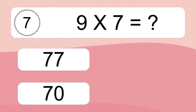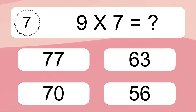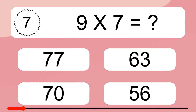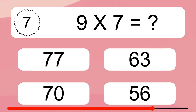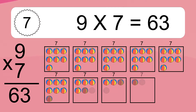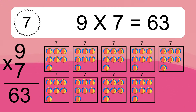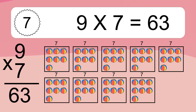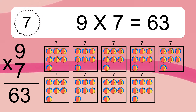9 times 7 equals what? 9 times 7 equals 63. We have 9 boxes, and each box has 7 colorful balls inside. If you count all the balls in all the boxes together, you will have 9 times 7 balls.